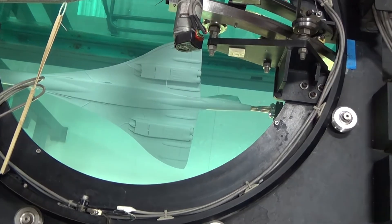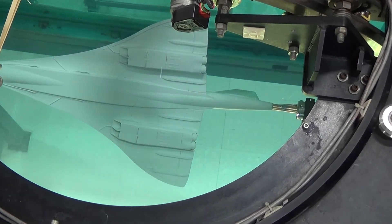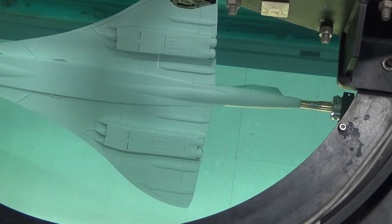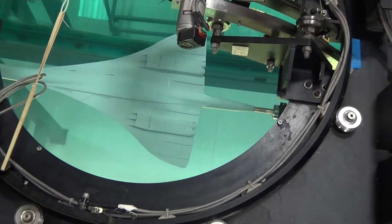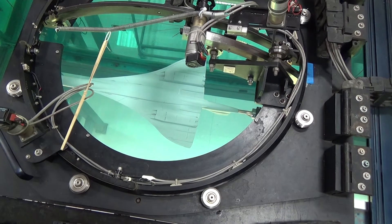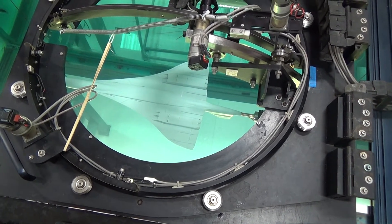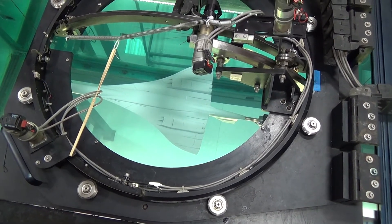We can also simulate nozzle exhaust by blowing out of the nozzle to investigate situations where that has an effect on the flow structure around the configuration.